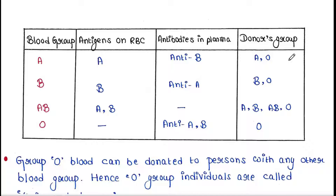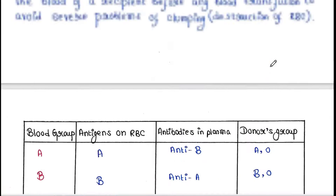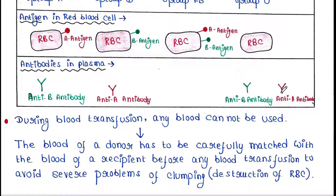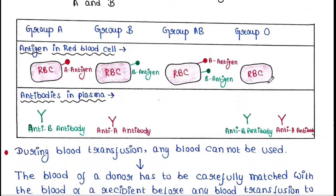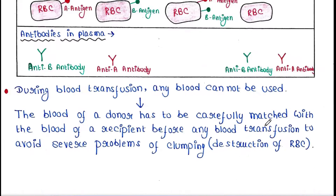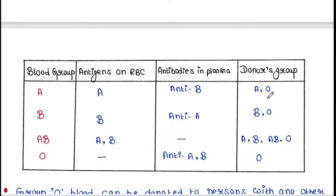You may have a question here: O group people have both anti-A as well as anti-B antibody in their blood plasma, right? Then how is it safe? Will anti-A antibody not bind to A antigen? The answer is no. When we take blood from a donor, its amount is very small. That much blood plasma as well as antibody gets diluted in our 5 liters of blood. Hence, the amount of anti-A antibody is ignorable and it doesn't cause any harm.